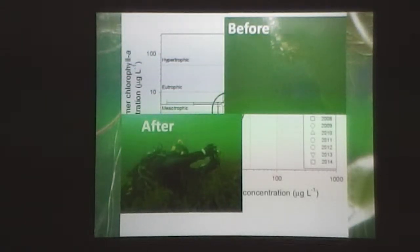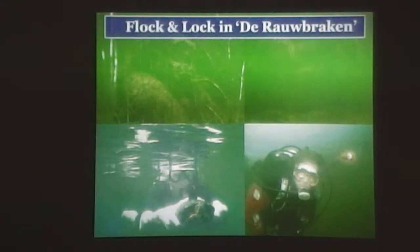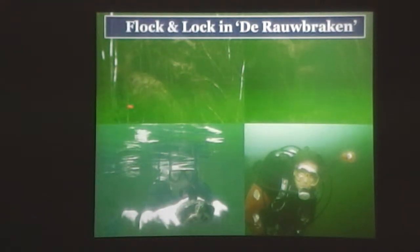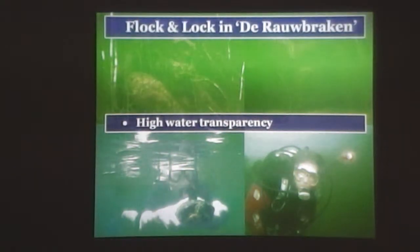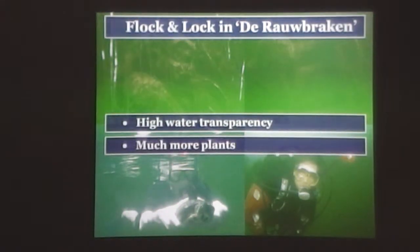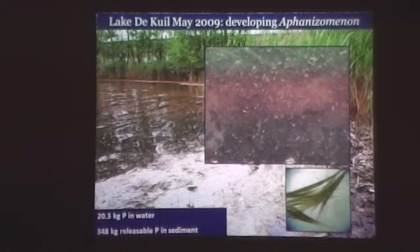Of course, we've got much more plants out there. To summarize this: we've got high water transparency and much more plants, and much lower algae biomass in the water. We had a second case.